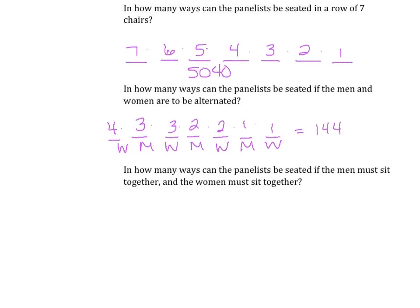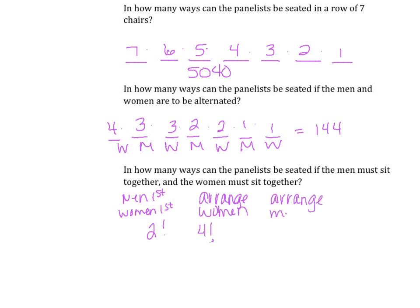In how many ways can the panelists be seated if the men must sit together and the women must sit together? We have two options: men first or women first — two factorial. We can arrange the women four factorial ways and the men three factorial ways. Multiplying all these factorials together — 2 times 1 times 4 times 3 times 2 times 1 times 3 times 2 times 1 — gives us 288 ways to arrange them.